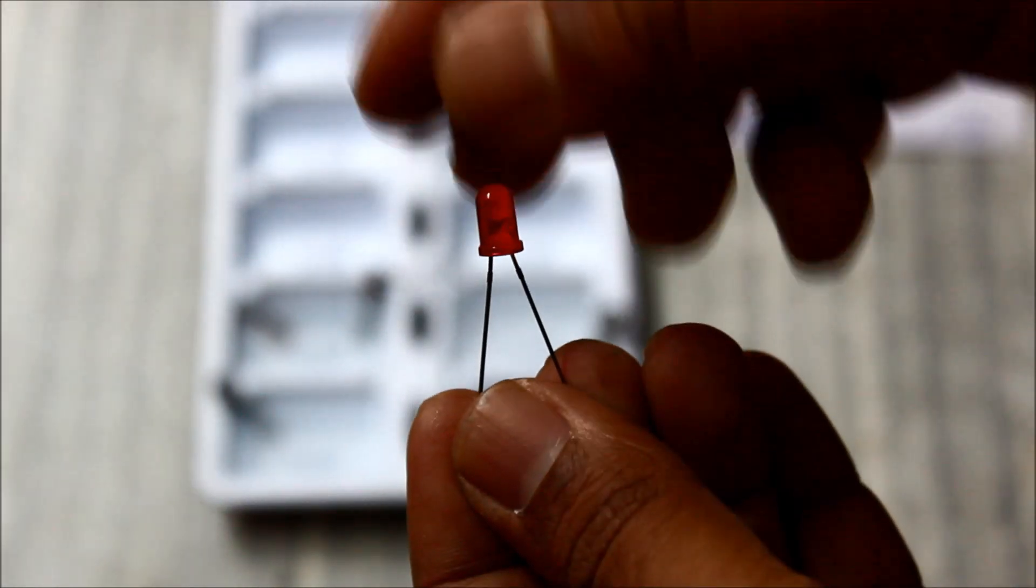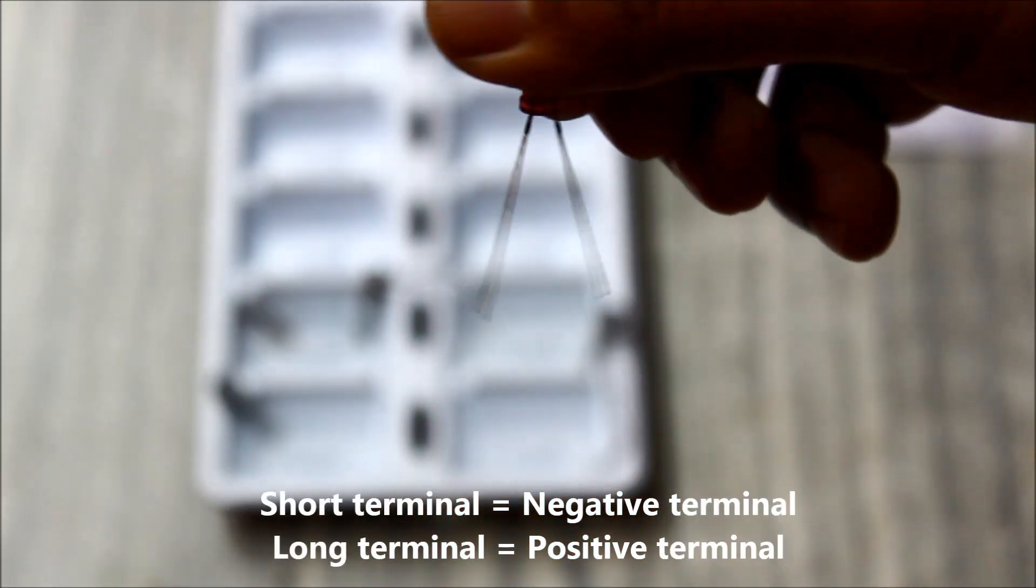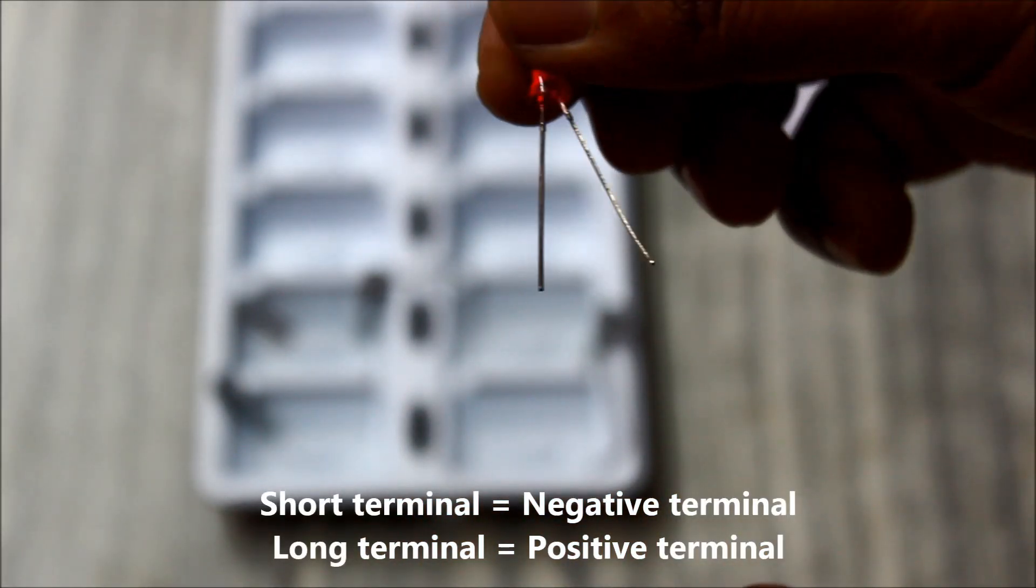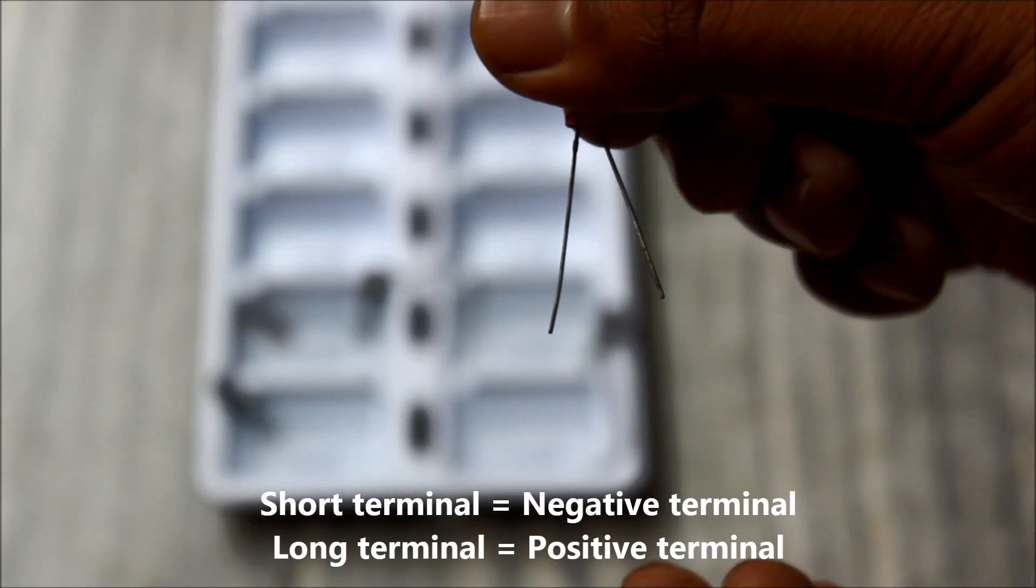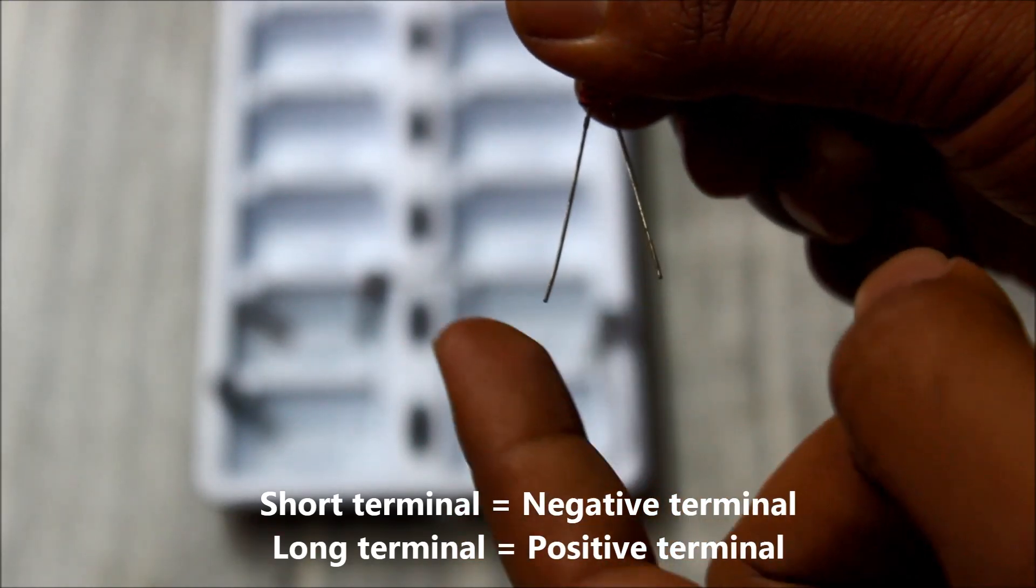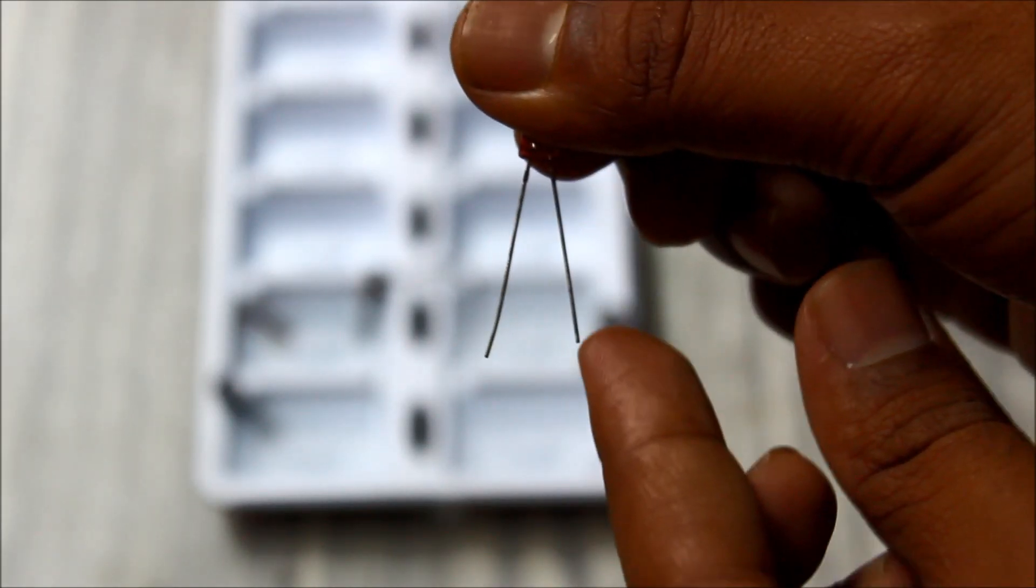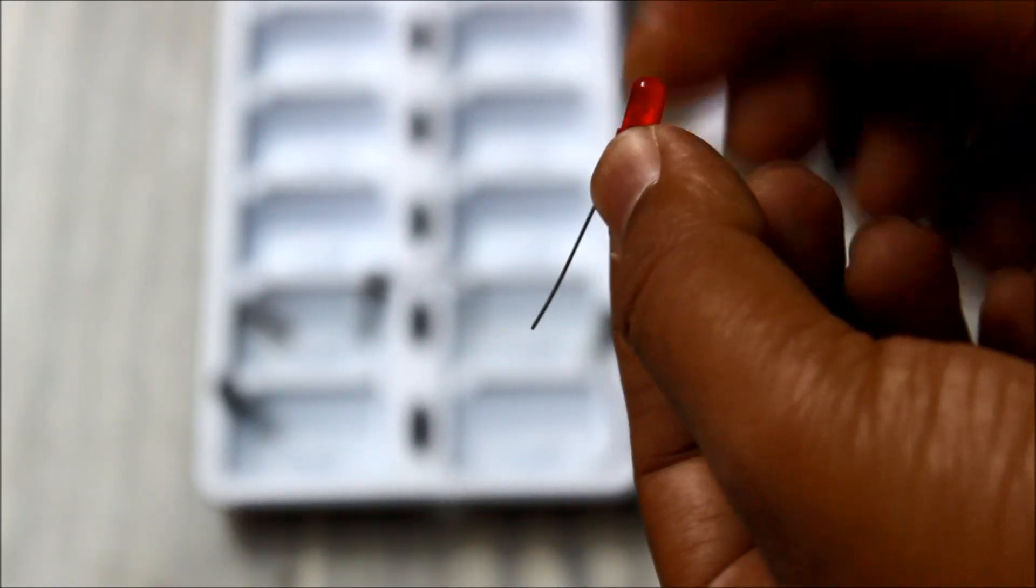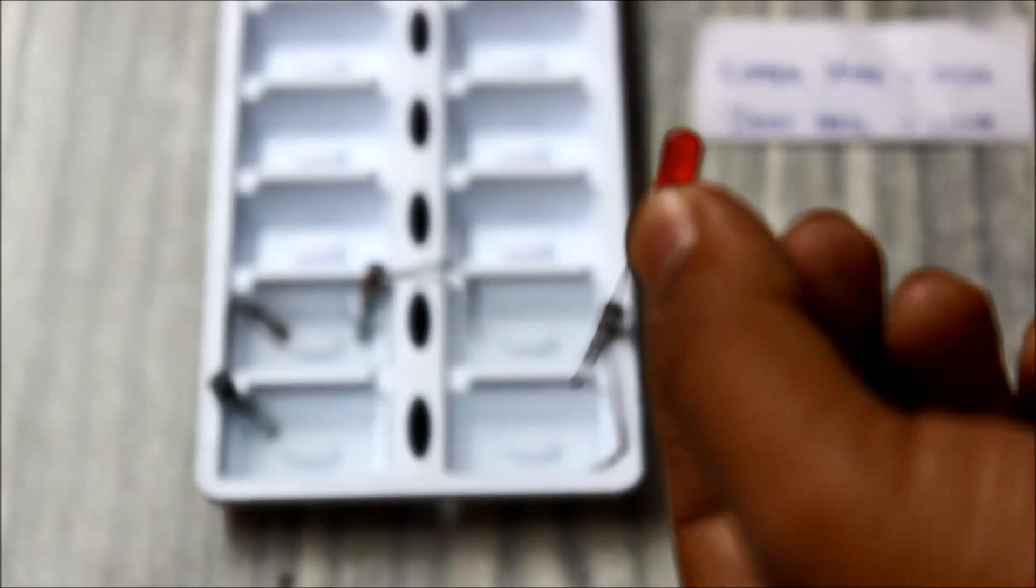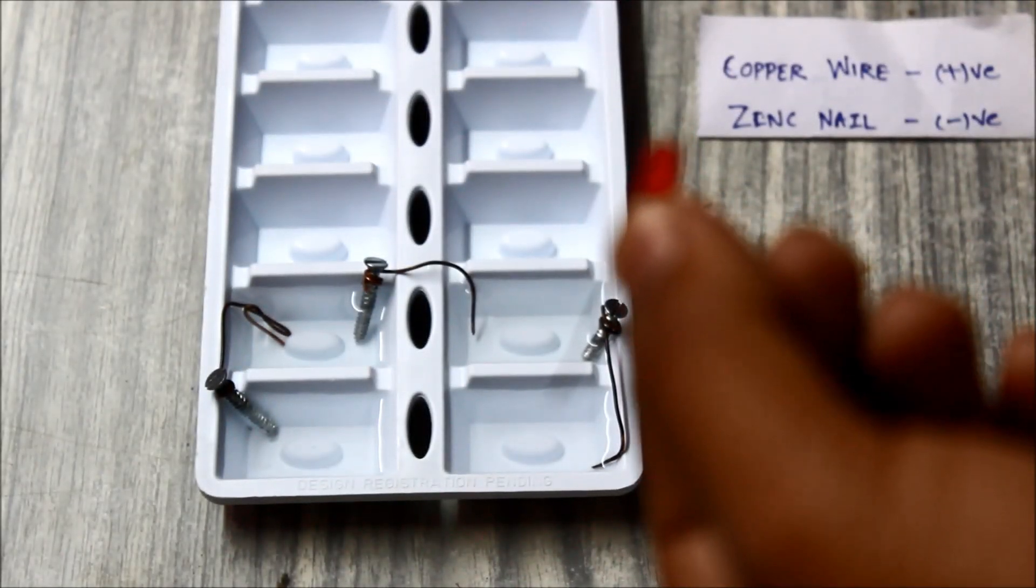These work on DC type of voltage and there is a positive and negative terminal. There are two legs—one is shorter than the other. The shorter terminal is actually the negative terminal and the longer terminal is your positive terminal. We'll just put it inside the vinegar battery and see what happens.